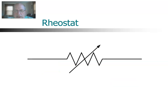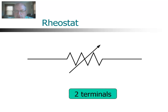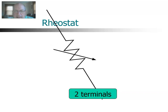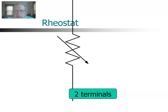The next symbol is a rheostat. A rheostat is a variable resistor. It has two terminals and allows you to vary the value of the resistance. As is typical with most components, in order to indicate that the value is variable, you simply draw an arrow through the component. The exact direction of the arrow is not critical — it just indicates the component has a variable value. The rheostat can also be drawn vertically, just like the resistor.